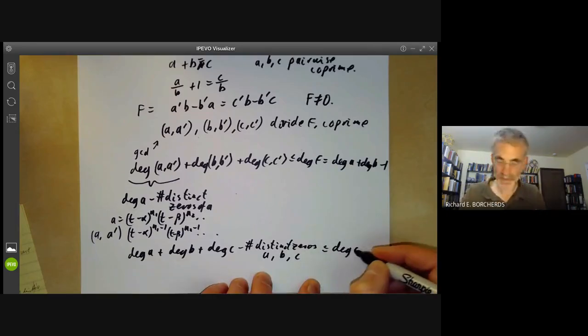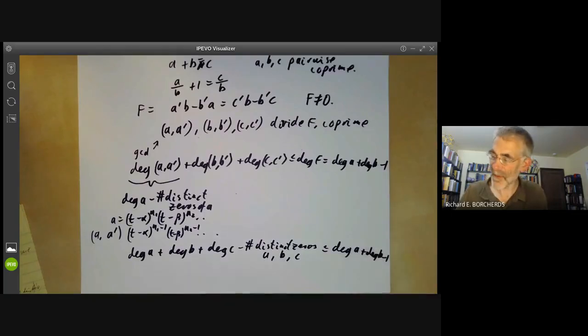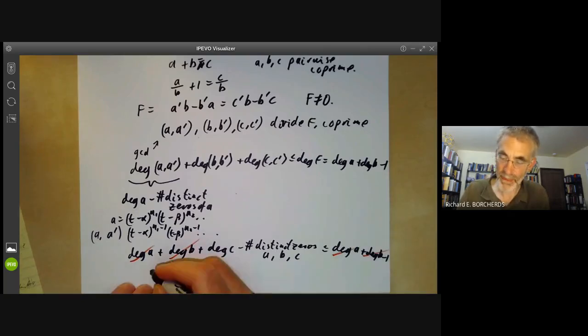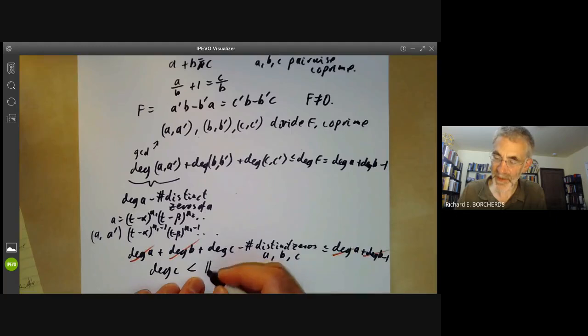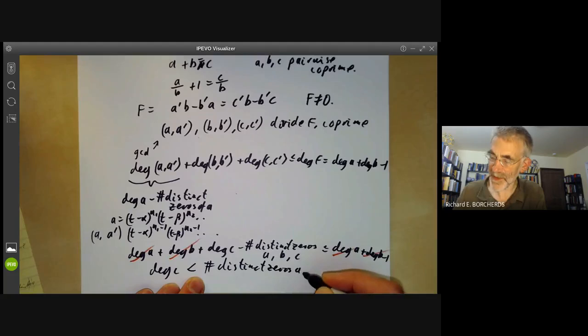is less than equal to the degree of A plus the degree of B minus one. And now we notice that we've got this factor degree of A on the left and the right, and this factor degree of B on the left and the right. And so we find the degree of C is less than the number of distinct zeros of A and B and C, which is what we wanted to prove.